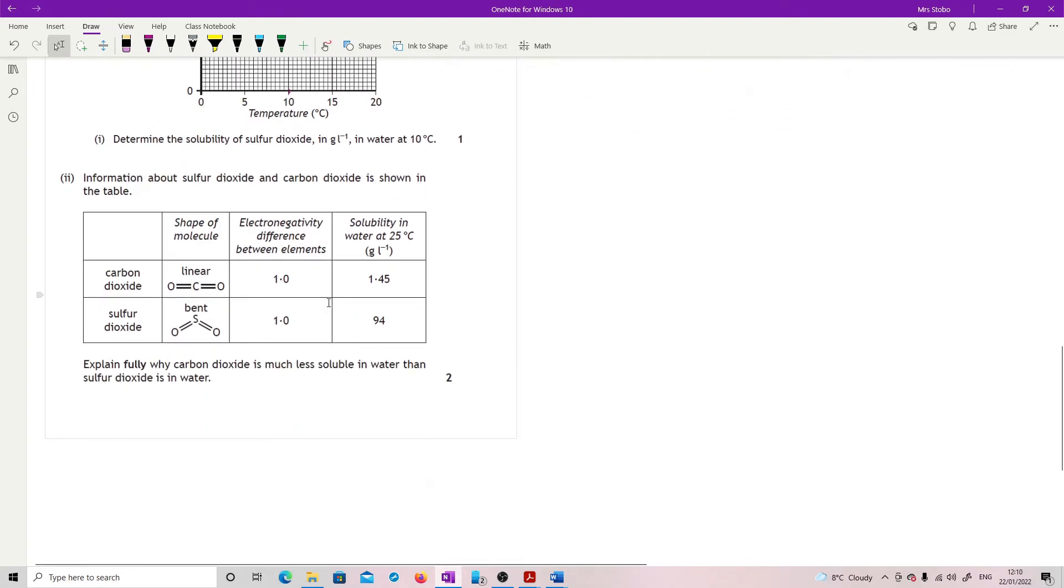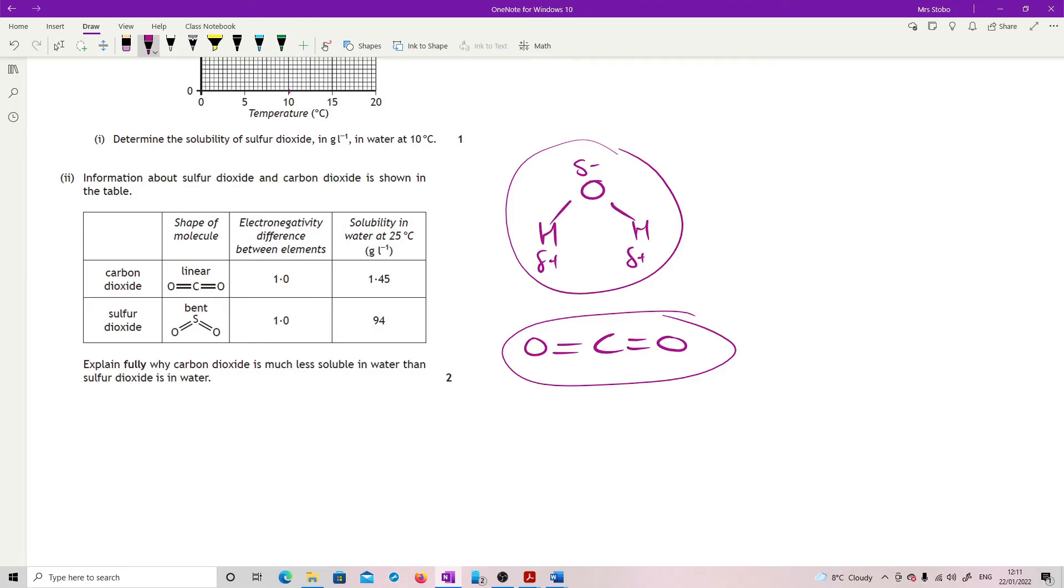Information about sulfur dioxide and carbon dioxide shown in the table. Explain fully why carbon dioxide is much less soluble in water than sulfur dioxide is in water. So this is all to do with like to like in terms of dissolving. And water, you should know, is a highly polar solvent. We've got delta minus on these sides, delta pluses over here. So the carbon dioxide does have polarity inside the bonds. But because it's got complete molecular symmetry, that means that we have basically got a non-polar molecule. So this molecule here is not going to associate with the water because it's non-polar. So its solubility is going to be not brilliant.